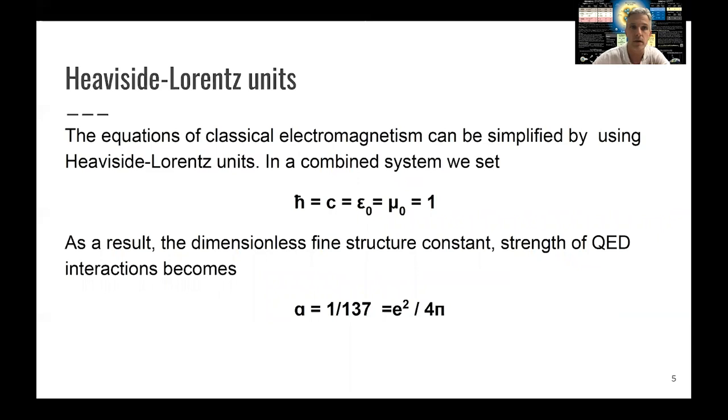On top of this, it's useful to use Heaviside-Lorentz units and combine them with the natural units we discussed. So what we do in addition here is set the permittivity in free space to 1 and also the permeability in free space to 1, so epsilon naught and mu naught to 1.